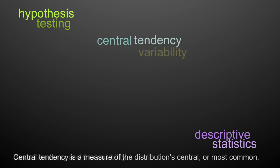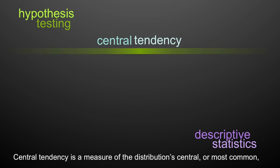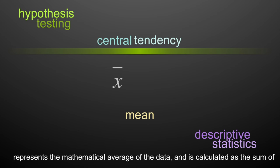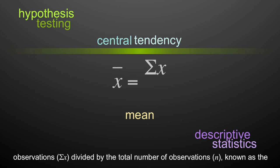Central tendency is a measure of the distribution's central or most common value. The mean of the observed value, known as the sample mean, represents the mathematical average of the data and is calculated as the sum of observations divided by the total number of observations, known as the sample size.